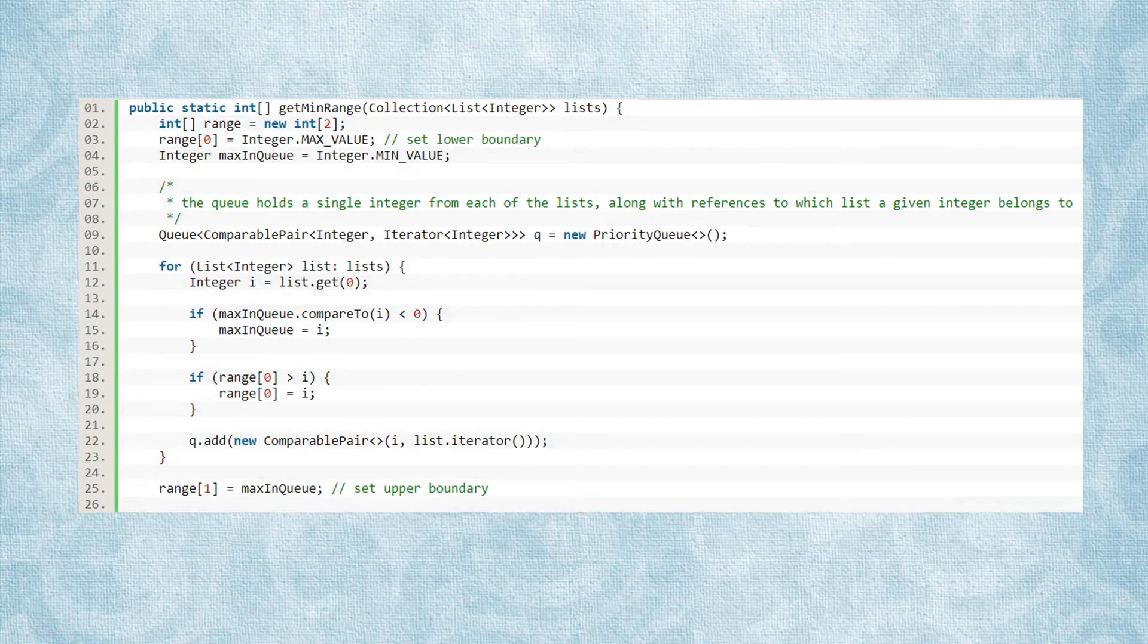Here is an actual implementation of such a function. The first section simply places a single value from each of the lists into the queue.